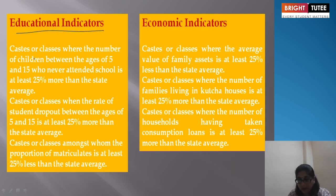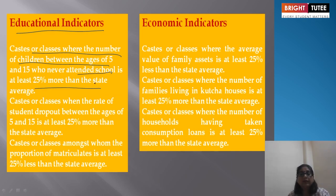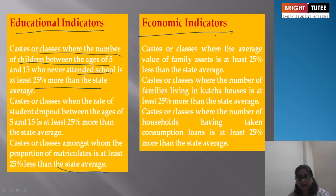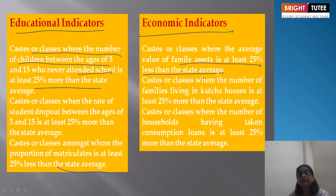Educational indicators: castes or classes where the number of children between ages 5 and 15 attending school is at least 25 percent less than the state average; castes or classes where the rate of student dropout between ages 5 and 15 is at least 25 percent more; and castes or classes among whom the proportion of matriculates is at least 25 percent less than the state average. Economic indicators: castes or classes where the average value of family assets is at least 25 percent less than the average; where the number of families living in substandard houses is at least 25 percent more than the state average; and where households having taken consumption loans is at least 25 percent more than the state average.